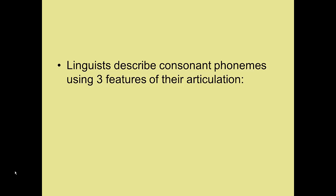The individual sounds of a language are called phonemes. Phonemes include both the vowels and consonants of a language. In this video, we're going to concentrate on the consonants of American English. Linguists describe consonant phonemes using three features of their articulation.